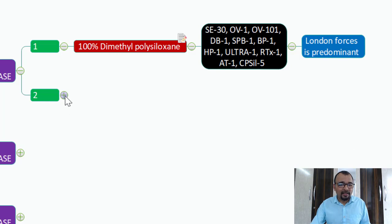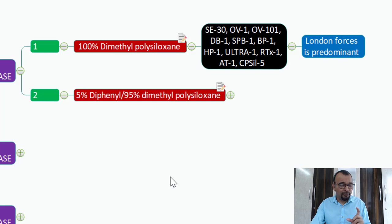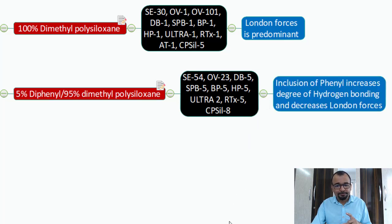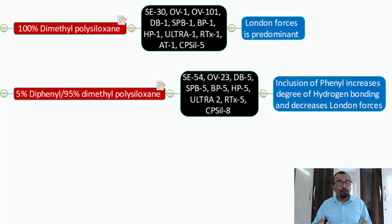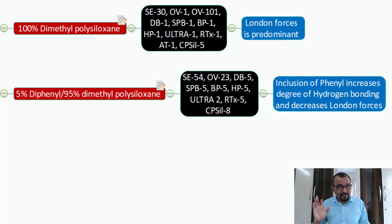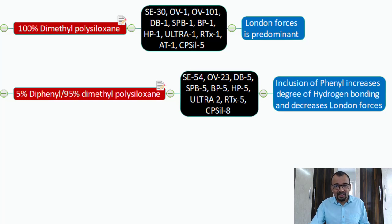The second option in the non-polar category is 5% diphenyl and 95% dimethyl polysiloxane. Here are a few commercially available examples. In the case of 100% dimethyl polysiloxane, interaction is only through London dispersion forces. But with 5% diphenyl added, the phenyl compound present is going to increase the degree of hydrogen bonding, giving us an additional interaction force.